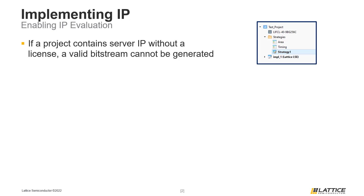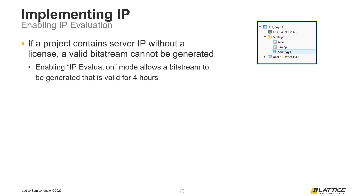The strategy setting users will have to enable is called IP Evaluation. If the IP Evaluation setting is enabled, users will be able to generate a valid bit stream for their project for 4 hours, even if their project contains IP that doesn't have a valid IP license. If this setting is not enabled, users will not be able to generate bit streams for projects with no IP licenses.